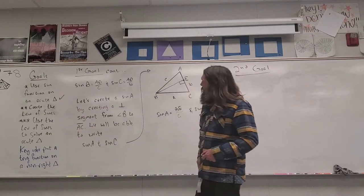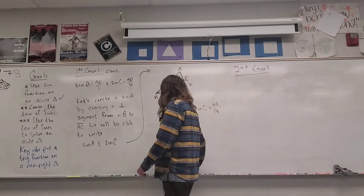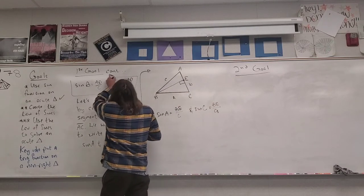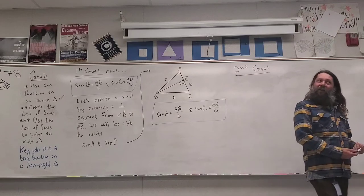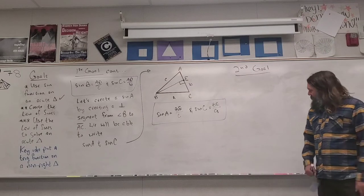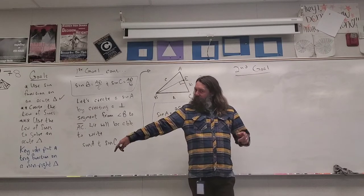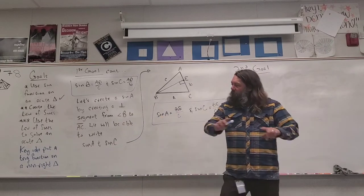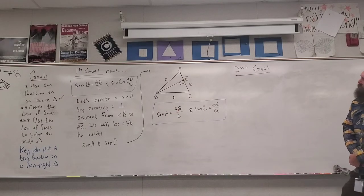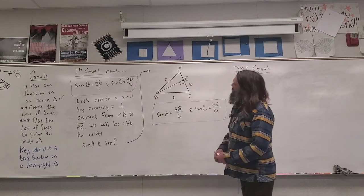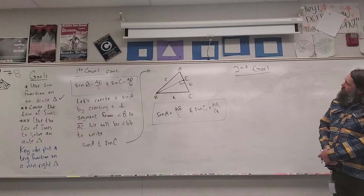Now I'm moving into my second goal: create the Law of Sines. We're going to get creative with the two sets of equations we have. Starting with the first set: sine of angle B equals the length AD over C, and sine of angle C equals the length AD over B. Both equations share the same length AD, so if we solve for that length, we can use a transitive substitution to get sine of B and sine of C into the same equation.